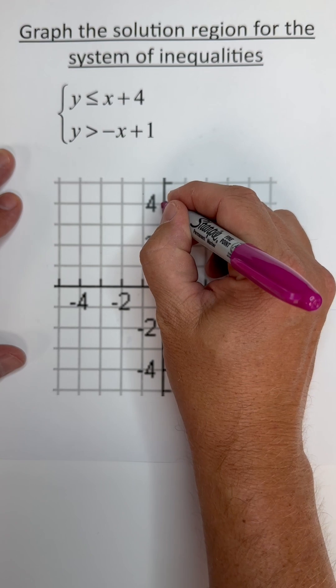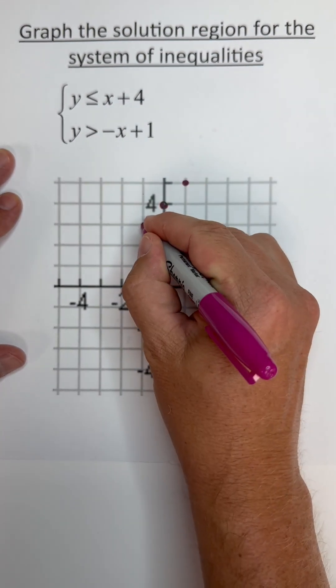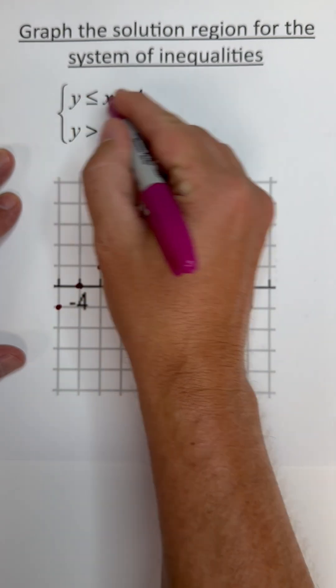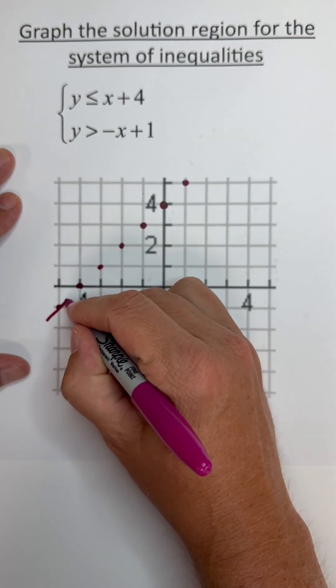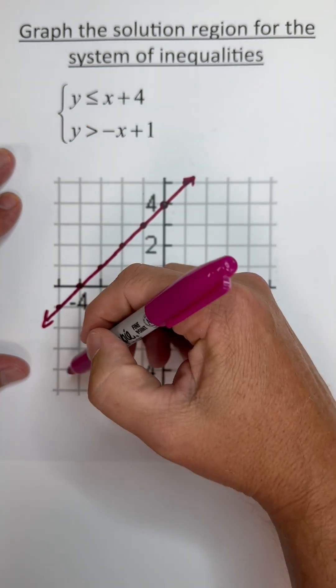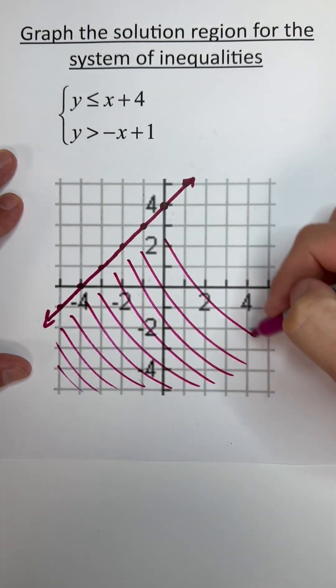Starting at positive 4 has a slope of 1. Positive 1 is up 1 and to the right 1, or down and to the left. Because there is an equal to, we can make this a solid line. And then it's a less than, so we want to shade everything below that line.